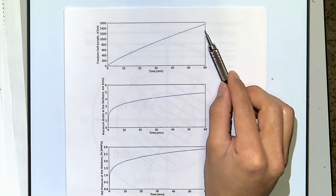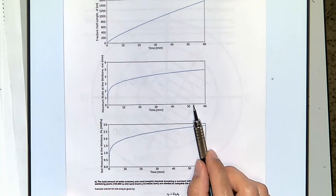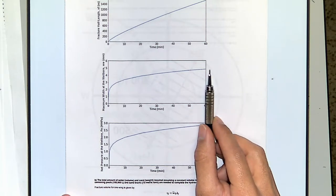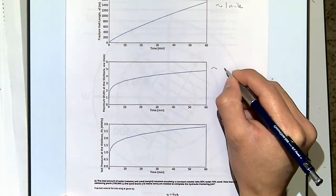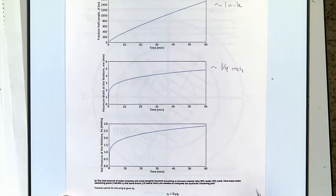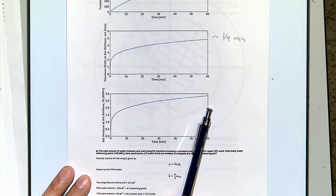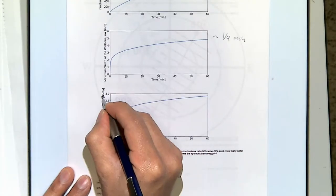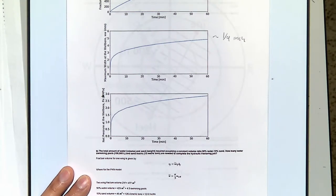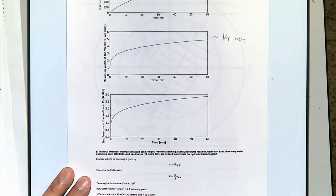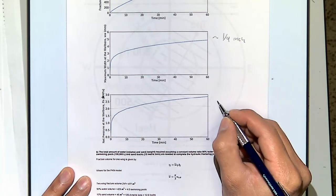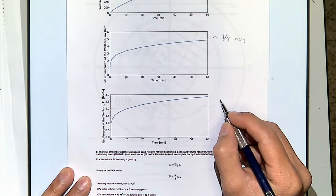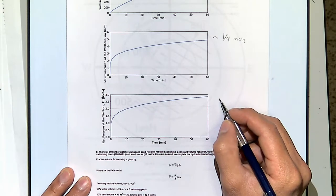The fracture width is about 5 millimeters or a quarter of an inch. So roughly one mile long and a quarter inch wide. The net pressure is about 2.5 MPa — converting, that's approximately 360 psi. As you can see, it's a few hundred psi, which doesn't go much higher than that.